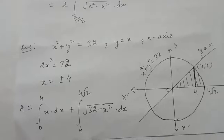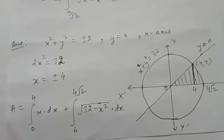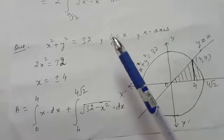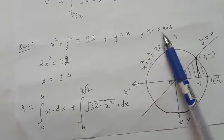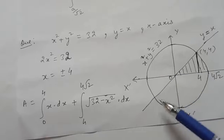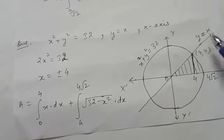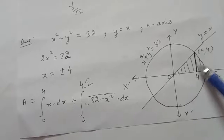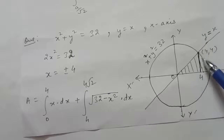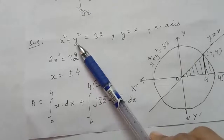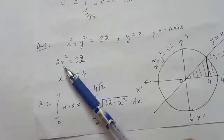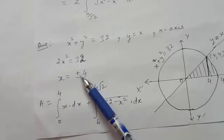The next question: find the area bounded by the circle x² + y² = 32, the line y = x, and the x-axis. This is the circle x² + y² = 32, this is the line y = x, and this is the x-axis — this is the region we want. Find the point of intersection: substituting y = x gives 2x² = 32, so x = ±4.